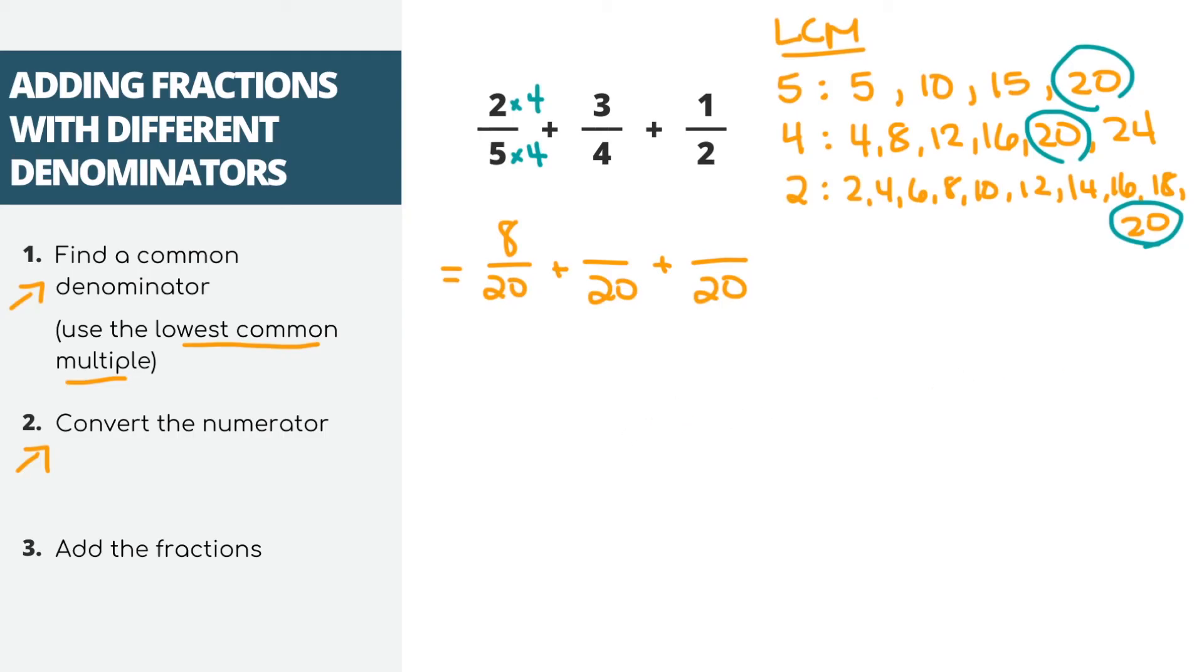Note that we haven't changed the fraction at all, because 2 over 5 is the same thing as 8 over 20, we just converted it. Now let's do the same thing for our next fraction, we converted the denominator to 20 by multiplying 4 times 5. So let's multiply the top by 5 as well, so we'll get 15 over 20, which is our new fraction.